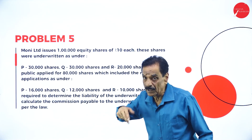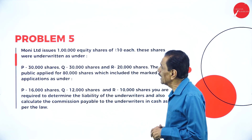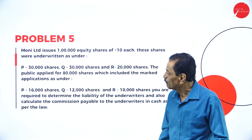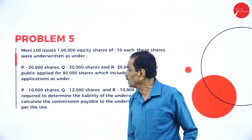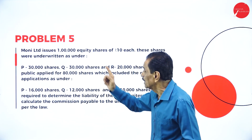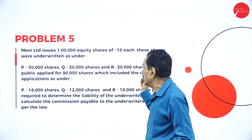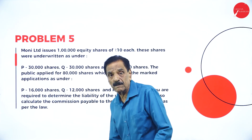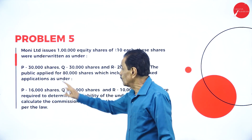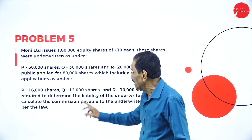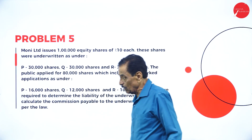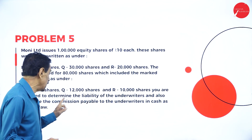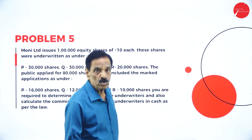Now this is Problem 5. We are solving for Ten Months Money Limited, which issued 1 lakh equity shares of rupees 10 each. These shares were underwritten as: P — 30,000 shares, Q — 30,000 shares, R — 20,000 shares, totalling 80,000 shares. The public applied for 80,000 shares, which include marked applications: P — 16,000, Q — 12,000, R — 10,000. We are required to determine the liability of the underwriters and calculate the commission payable in cash.